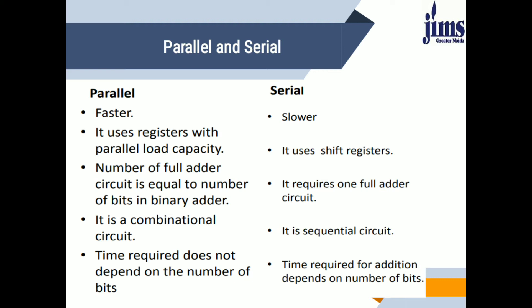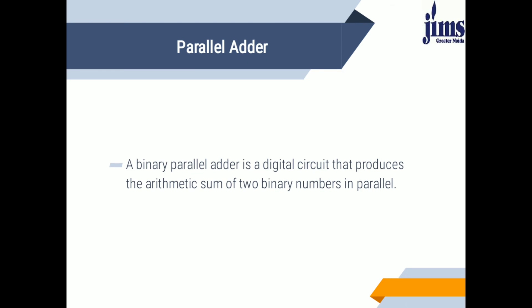A parallel adder is basically a combinational circuit, whereas a serial adder is a sequential circuit because it uses a sequential component — the D flip-flop. In a parallel adder, the time required does not depend on the number of bits, whereas in a serial adder, the time required for addition depends on the number of bits. A parallel adder is a digital circuit that produces the arithmetic sum of two binary numbers in parallel.